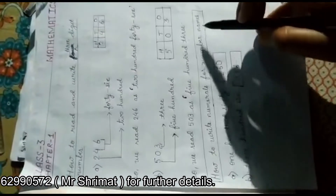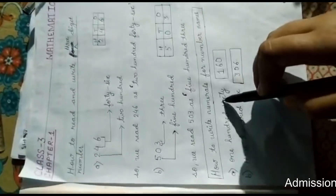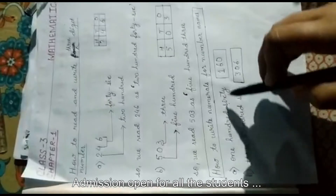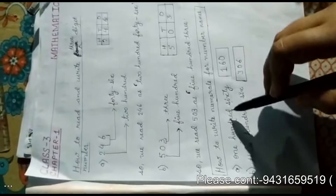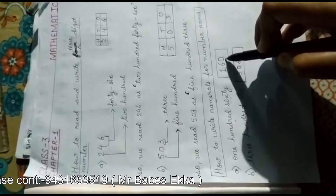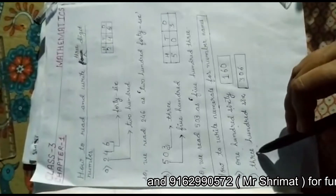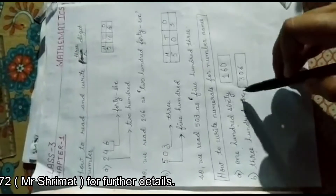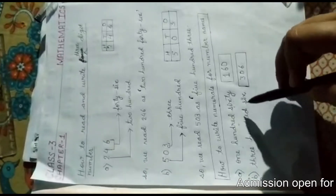We have taken one example: one hundred sixty. To write numerals for this number name, one hundred sixty — one hundred is 1, sixty is 60, so together that is 160. For three hundred six: three is at the hundreds place and six is at the ones place, so we write 306 and read it as three hundred six.